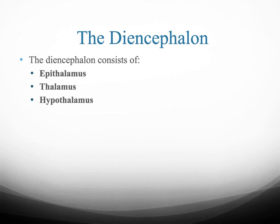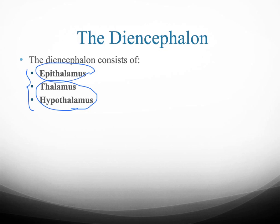The diencephalon, if you look at the first slide of the whole lecture, you're going to see that it is divided into three parts: the epithalamus, the thalamus, and the hypothalamus. Usually we just talk about the thalamus and the hypothalamus because they have several different functions.